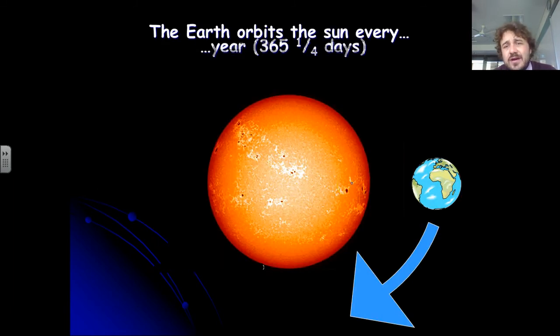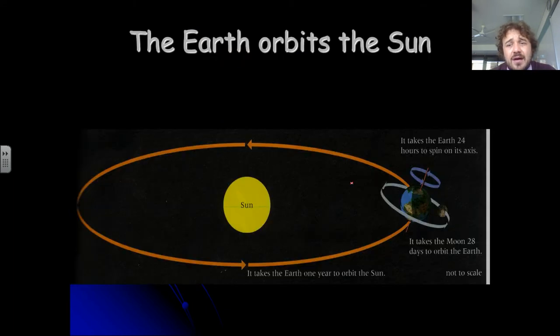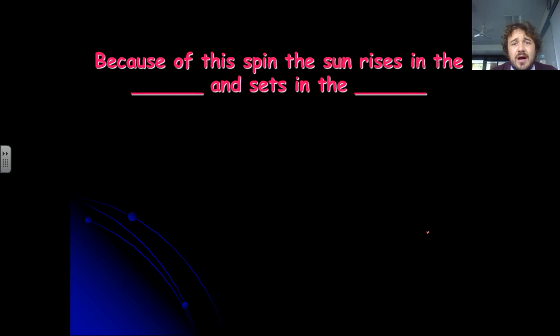So the Earth orbits the sun every year, which is 365 and a quarter days, and that's why we have the leap years. We just go 365 days and then we add that extra quarter on every four years. So this is a pretty important diagram, I would draw this for you. It takes 24 hours to spin around its axis, 28 days for the moon to go around the Earth, and a year to orbit the sun.